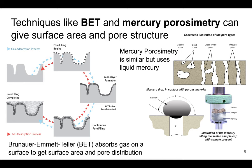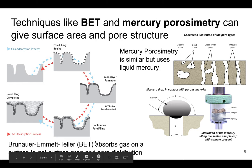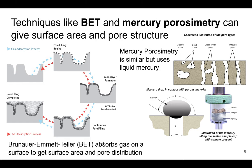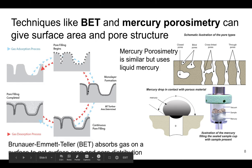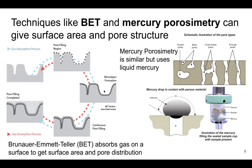Other techniques such as BET and mercury porosimetry give us information about surface area and also the pore structure of the surface. BET is named after three scientists who came up with the technique — we adsorb gas onto the surface and that amount of gas gives us the surface area, but also the variety of different pore sizes, both narrow and wide. Mercury porosimetry is very similar, but instead of gas adsorbing, liquid mercury is forced into the pores on the surface. These techniques give us quantitative numbers about the surface structure.